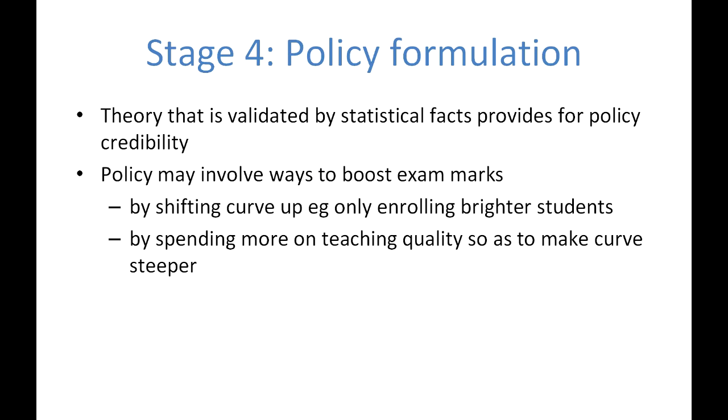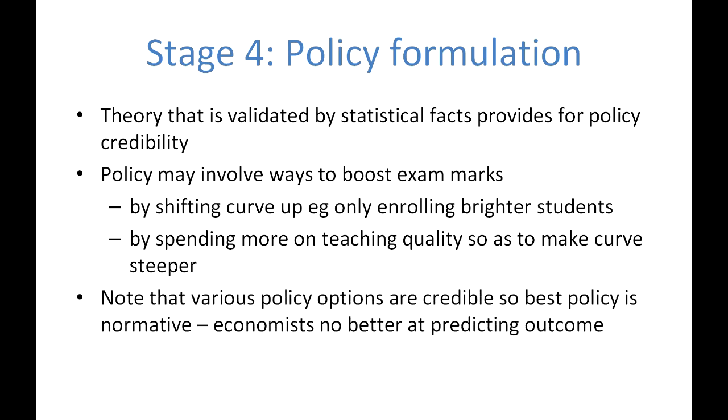Now policies may involve various ways of boosting exam marks. For instance, we could use a policy of enrolling only brighter students, which would tend to shift the curve up. That's what our theory would predict. On the other hand, we could spend more on teaching quality, which would change the slope of our curve and make it steeper. So that even the less bright students would be able to perform better. Notice, however, that both these options, and there are many more of course, both these options have credibility. Which is the best one? Well, economists are no better at predicting which policy is better because making a statement like a policy is best is a normative statement.